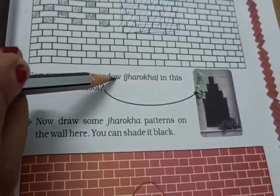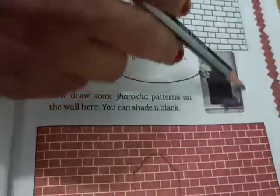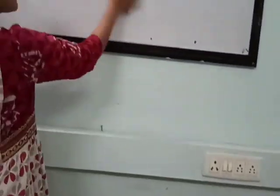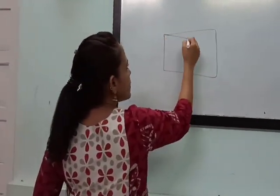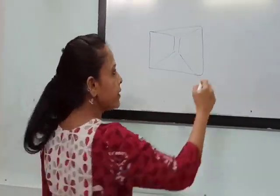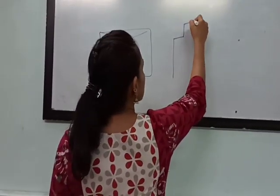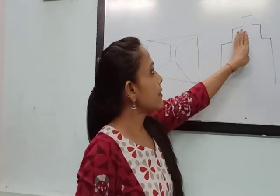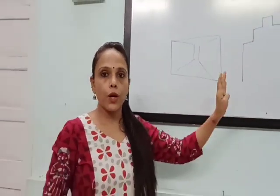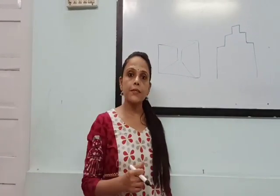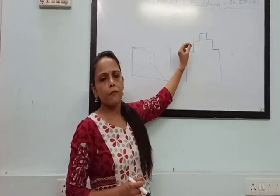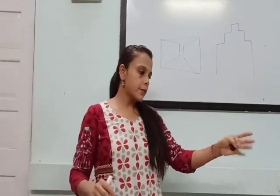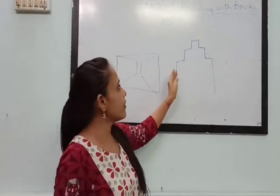Can you see the window in this photo of the school? This is a photo of Jagriti school. Normally we see windows like this, but here you can see a window with curves — this pattern is called a Jarokha. You must have seen different varieties of Jarokha when visiting palaces. Like jali patterns on walls, windows are also decorated in different ways, and we call that a Jarokha.